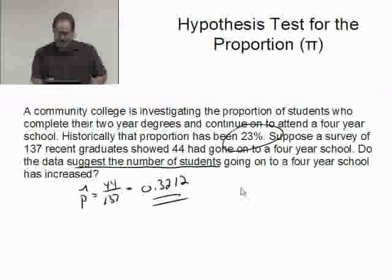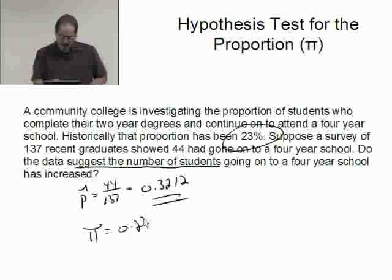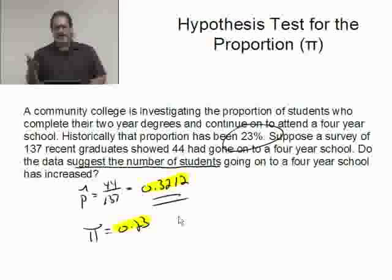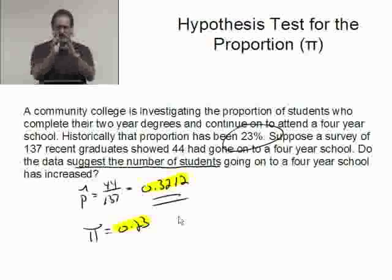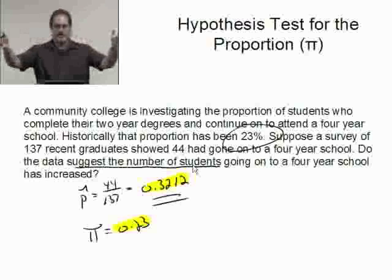Historically, it's been 23%, that's suggesting that pi is 0.23. So this is kind of good. Our sample statistic value is bigger than the believed pi. So it makes sense to go ahead and check to see if this is by chance. Are the two values close together, relatively close in terms of standard deviations, or is it really suggesting that the proportion has in fact increased? Are these two values far apart?